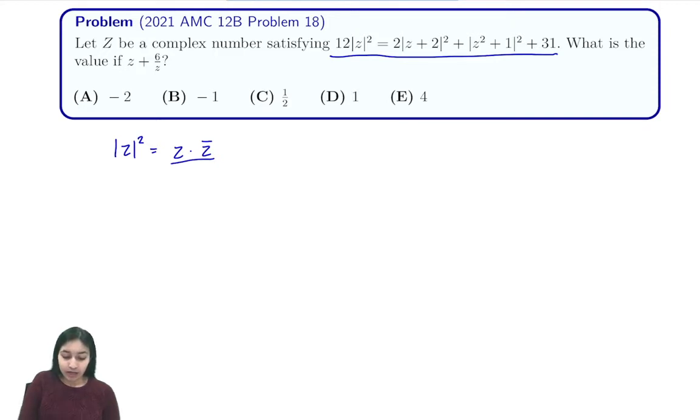So from here we'll see that we have 12 times z z bar is equal to 2 times z plus 2 times z bar plus 2 plus z squared plus 1 plus z bar squared plus 1, and then plus 31.